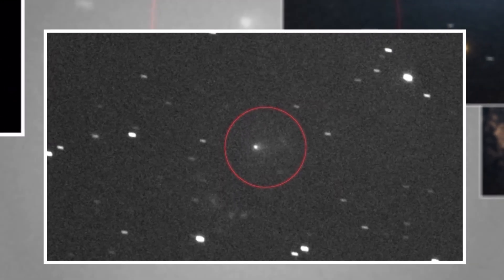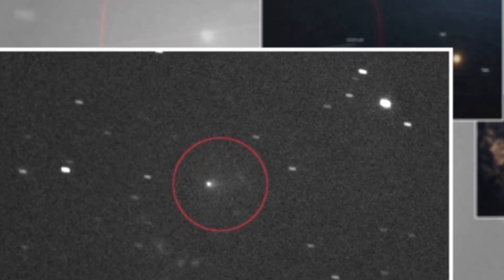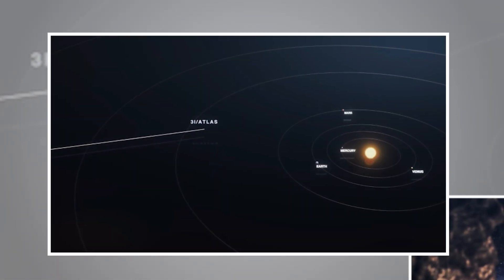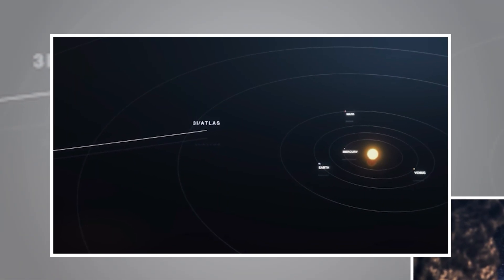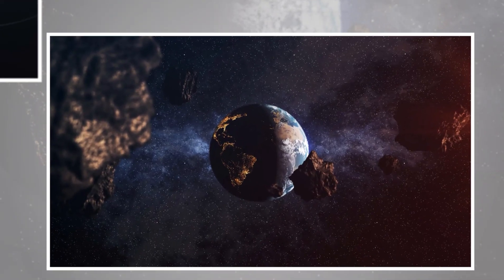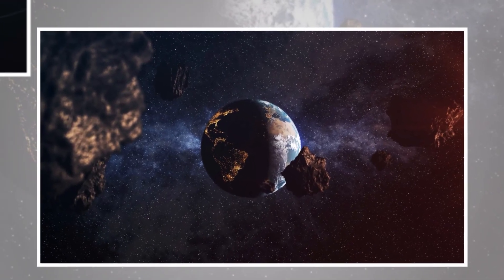Or at the very least, it was the natural result of whatever course this object was already on when it entered the solar system. And that tells us something really important. Earth was not the destination. We were never the main event.